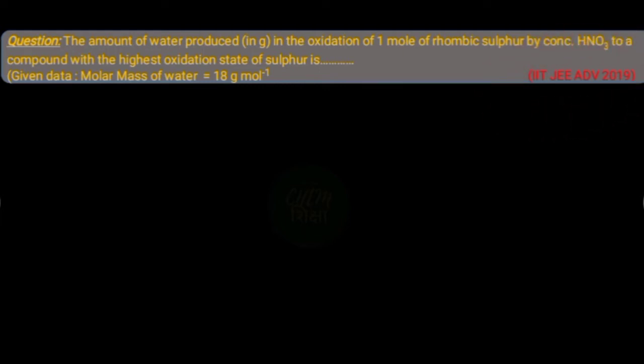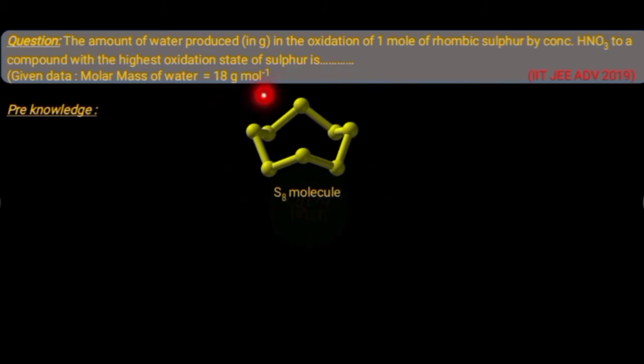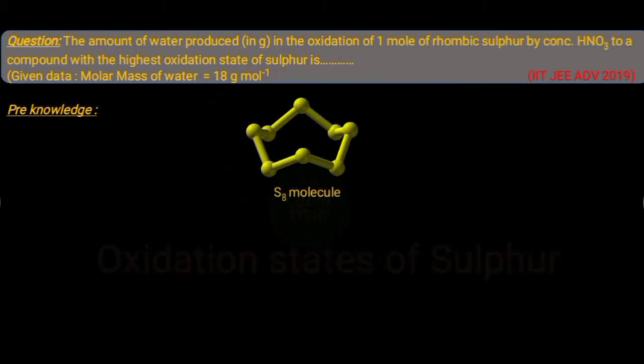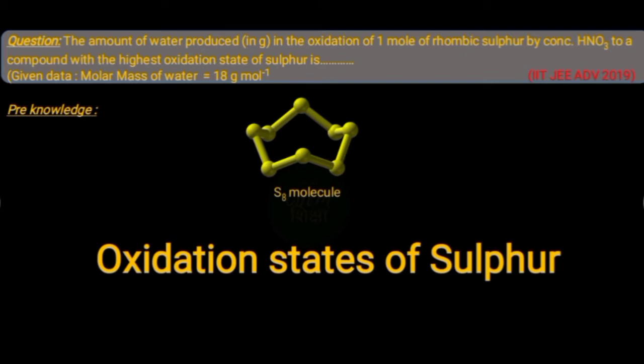To solve the problem, first we need to know the formula of rhombic sulfur. As it is an eight-membered ring, its formula is S8. Now S8 reacts with nitric acid to form a sulfur compound with its highest oxidation state.